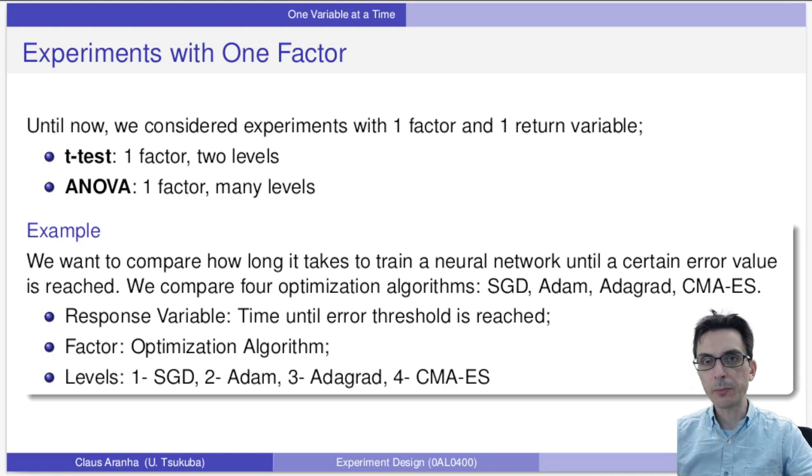When you prepare your experiment, the first thing before anything else is to make clear what is the response variable, what are the factors you're going to change, and what are the levels. If you don't define these things, you should not continue to the next steps of the experiment.